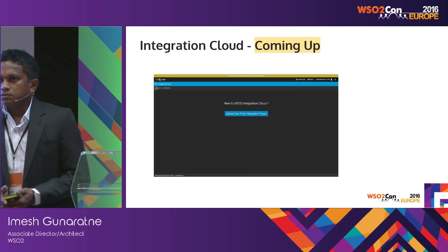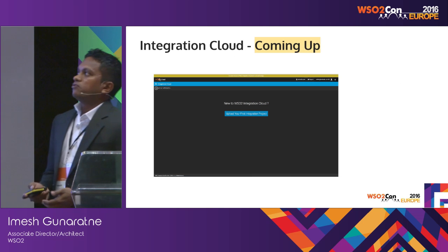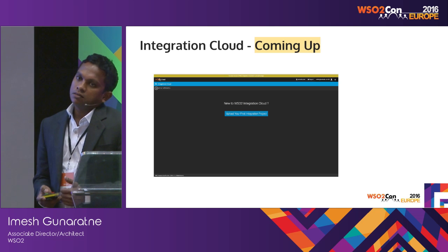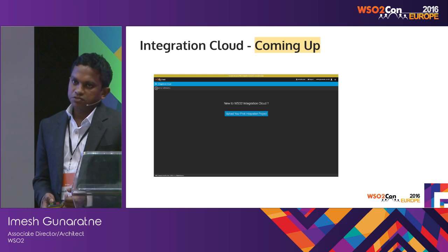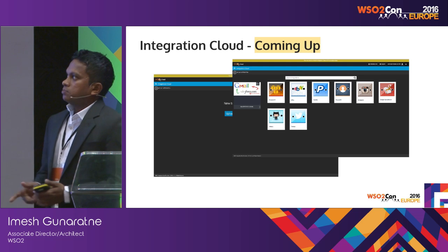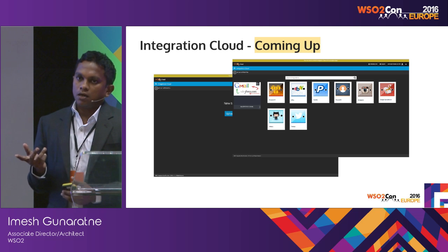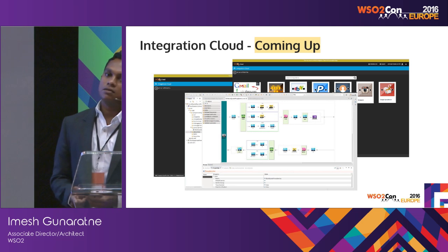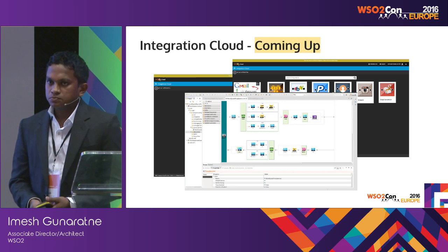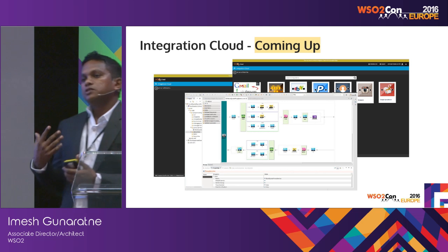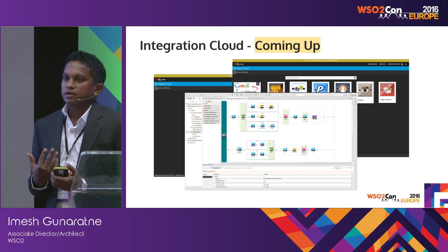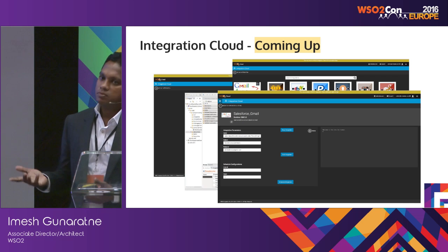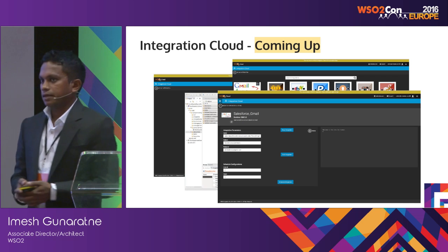Then the Integration Cloud — this would provide ESB as a service, specifically focused on cloud-to-cloud integrations. It provides a UI for deployment. The integration can be designed using WSO2 Developer Studio, exported into CAR files (carbon artifact files), and then deployed in the Integration Cloud. This solution will be available in another few weeks' time.